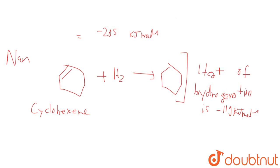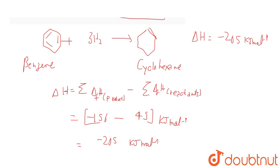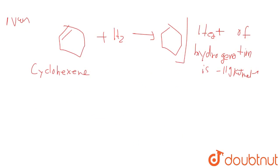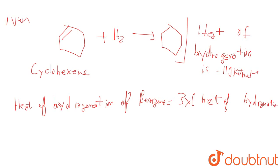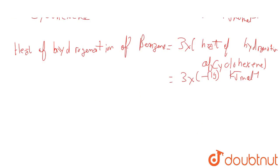benzene has thrice the number of double bonds as compared to cyclohexene. Therefore, we can write heat of hydrogenation of benzene equals 3 times the heat of hydrogenation of cyclohexene. So it would be 3 times minus 119 kilojoules per mole, and further calculation gives minus 357 kilojoules per mole.